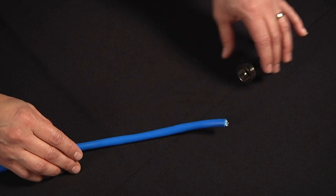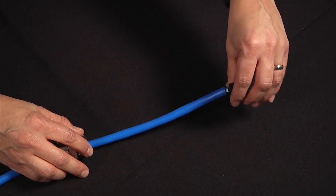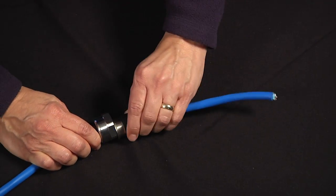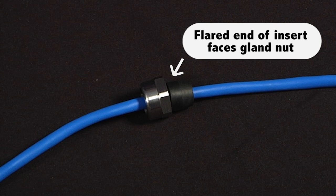Next, slide the gland nut onto the cable, followed by the insert. Make sure the nut and insert are on the cable the right way. The nut has to be able to screw onto the gland body when everything is put together. The flared end of the insert should be facing the nut so that the insert fits snugly inside the nut.